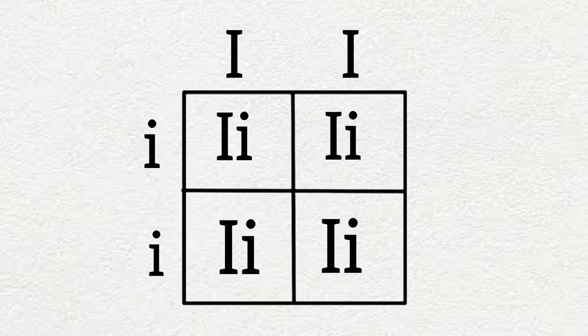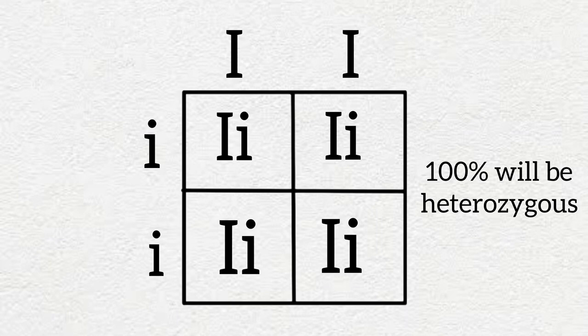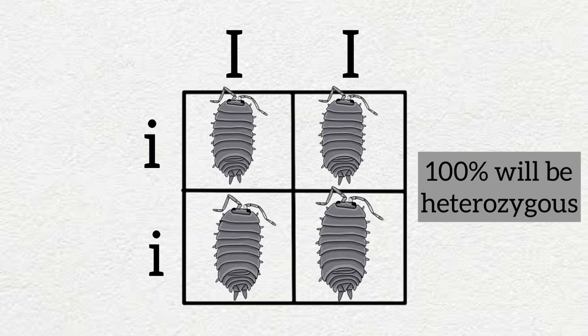With the Punnett square completed we can see that 100% of the offspring will contain one dominant and one recessive allele, making them heterozygous individuals with gray coloration. So now we have plenty of isopods that are common gray but are carrying the orange gene. Now remember our goal is to make a colony full of orange Porcellio laevis. So we still have some work to do.